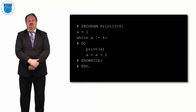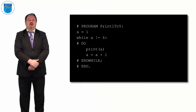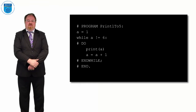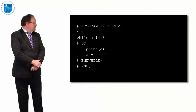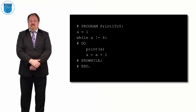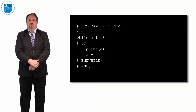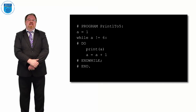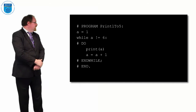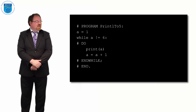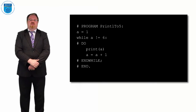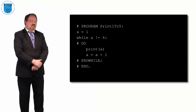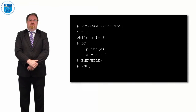A starts off as 1. We print out 1, add 1, then print out 2, then 3, then 4, then 5. When we print out 5, we add 1 onto a and it becomes 6. While a is not equal to 6 - if 6 equals 6, the condition is no longer valid, so it jumps to end while. To print out 1 to 1,000, we just change 'while a not equal to 6' to 'while a not equal to 1001,' and that will print out the numbers 1 to 1,000.